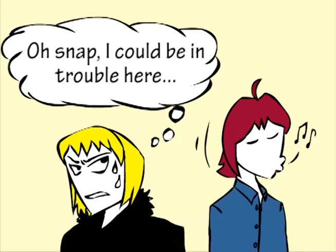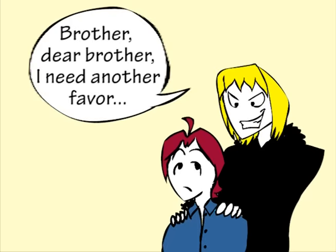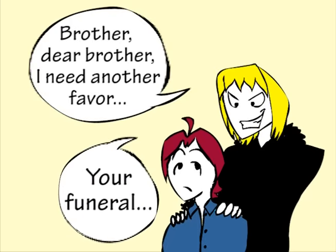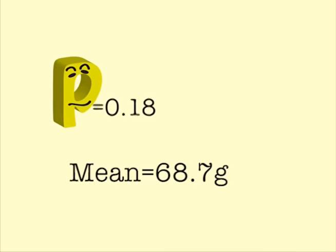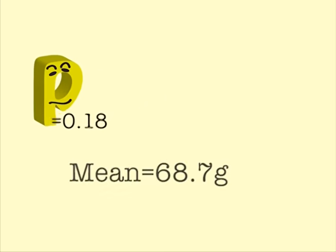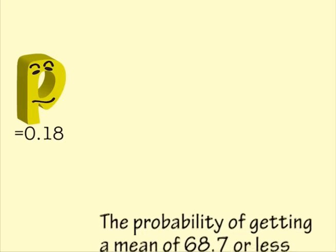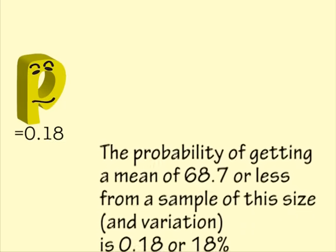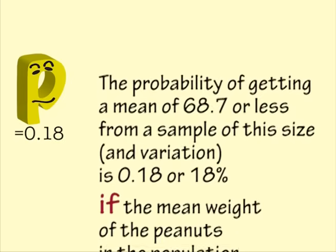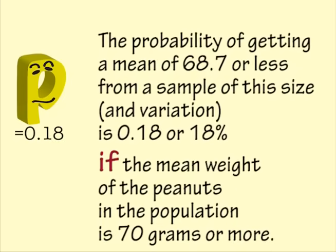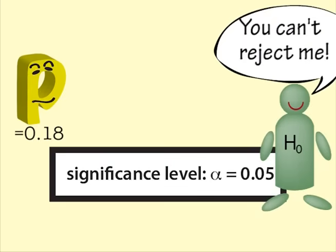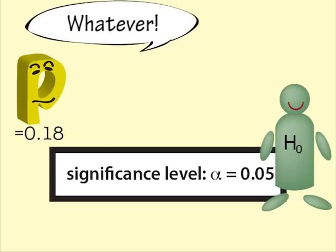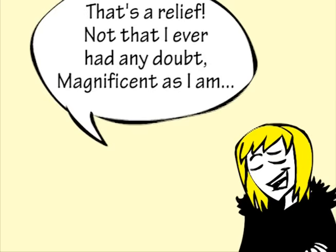This caused Helen to ask herself: does this provide enough evidence that the bars are short of peanuts, or could this result just be from luck? She asks her brother to use Excel to find the p-value for this data, comparing with a mean of 70g. The p-value is 0.18. Judging from the data that we have, there is an 18% chance of getting a mean as low as this, or lower, if there is nothing wrong with the bars — that is, if the null hypothesis is true and the mean weight of nuts is 70g or more. This p-value of 0.18 does not provide enough evidence to reject the null hypothesis. In this case, Helen does not have evidence to say that the bars are short of peanuts. This is a relief.